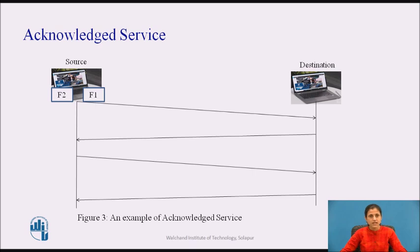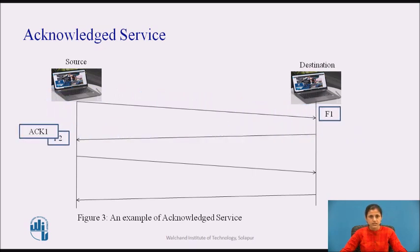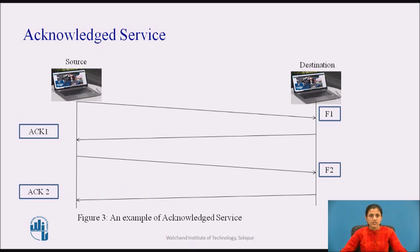First, you need to understand what an acknowledged service is. In networking and telecommunications, an acknowledgement is a signal passed between communicating processes, computers, or devices to signify receipt of the message as part of a communications protocol. Providing acknowledgement in the data link layer is just an optimization, never a requirement. Each frame sent is individually acknowledged, so the sender knows whether a frame has arrived correctly or been lost. If it has not arrived within a specified time interval, it can be sent again. This service is useful over unreliable channels such as wireless systems.